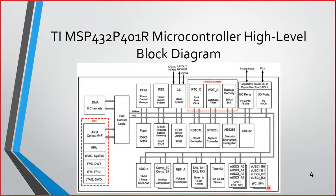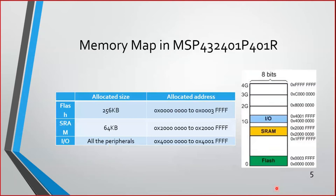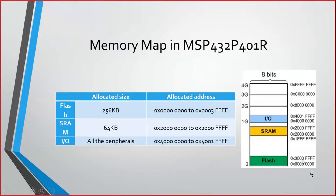This is a general block diagram of the MSP-432. This is the memory map of MSP-432P401R. From address 0x00000000 to 0x0003FFFF it is having flash memory — that is why it is known as 256 KB flash memory. From 0x20000000 onwards you have the SRAM, up to 0x2000FFFF.